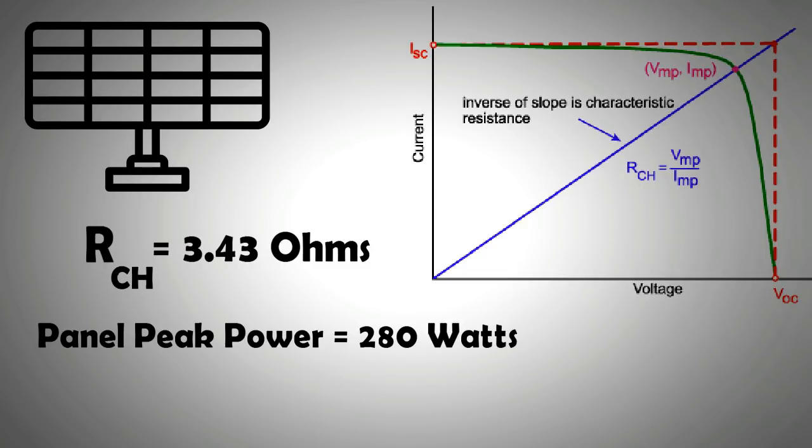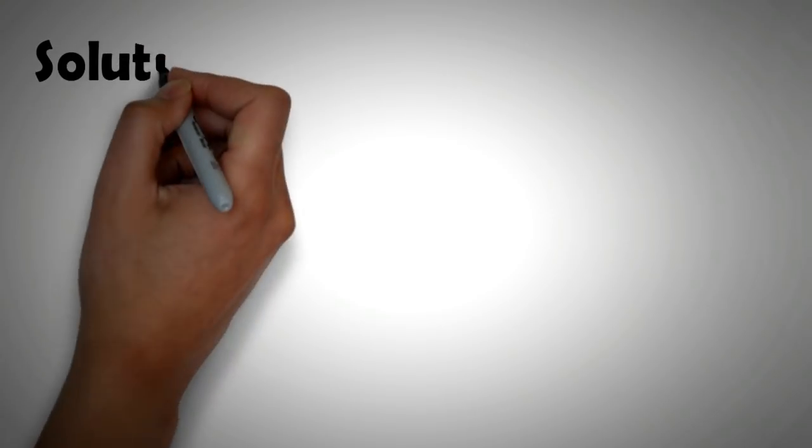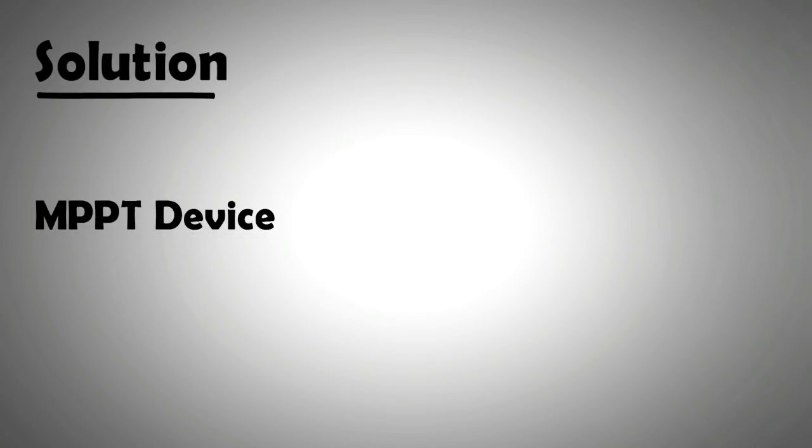Now as mentioned earlier, it is very difficult to have a load that has similar internal resistance or impedance value as your solar panels. So what is the solution? Well, the solution is that it is always advisable to use an MPPT device between your panel and your load.